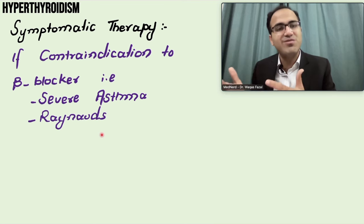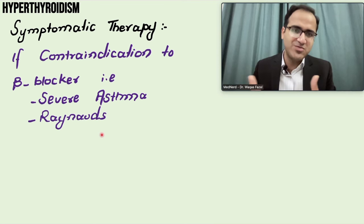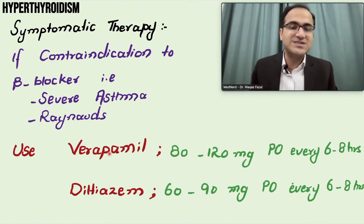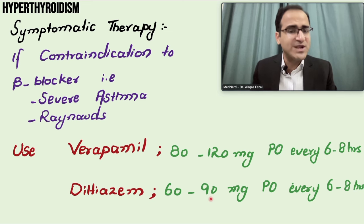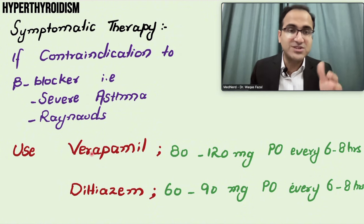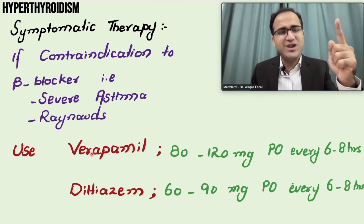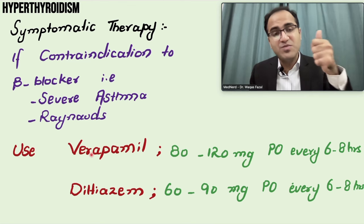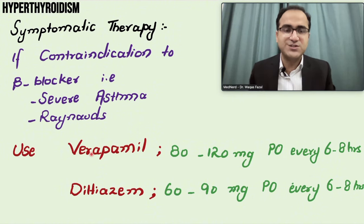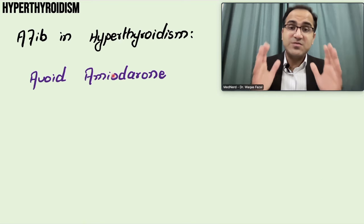If the patient has a contraindication to beta blockers - like severe asthma or Raynaud's phenomenon - you cannot give beta blockers. In these patients, you can use calcium channel blockers like verapamil 80 to 120 mg orally every 6 to 8 hours, or diltiazem 60 to 90 mg orally every 6 to 8 hours. These act specifically on the heart without peripheral actions. Propranolol remains the main drug because it has both peripheral and beta-1/beta-2 blocking effects including T4 to T3 conversion blockade.